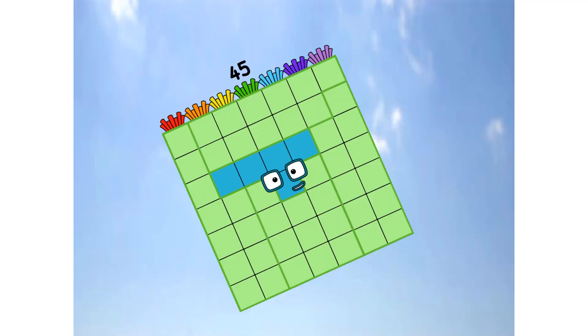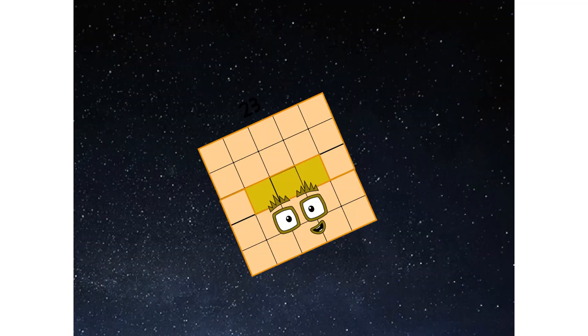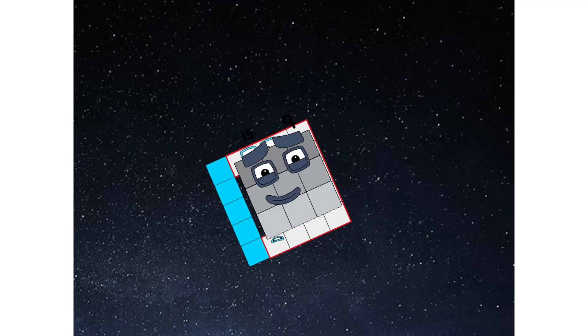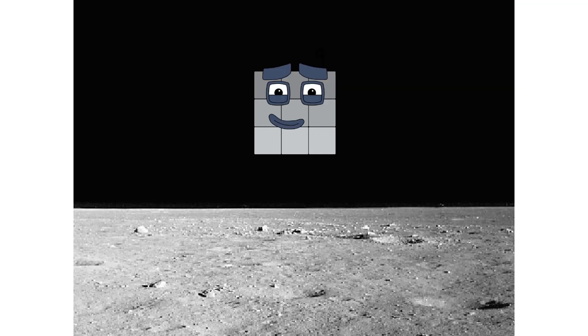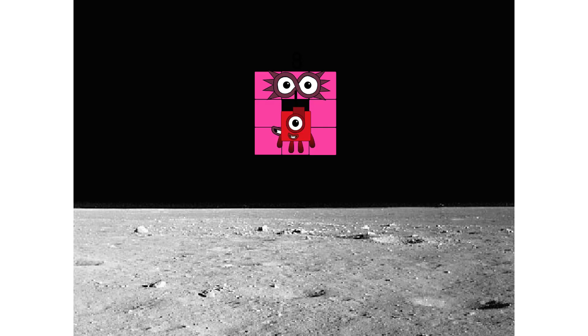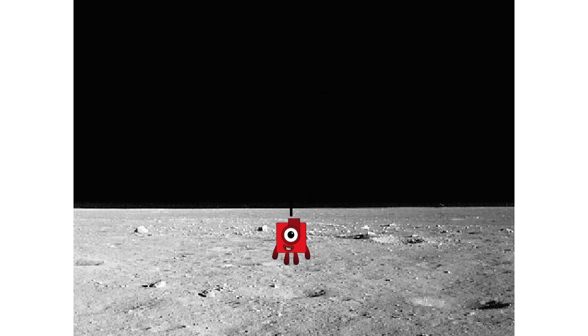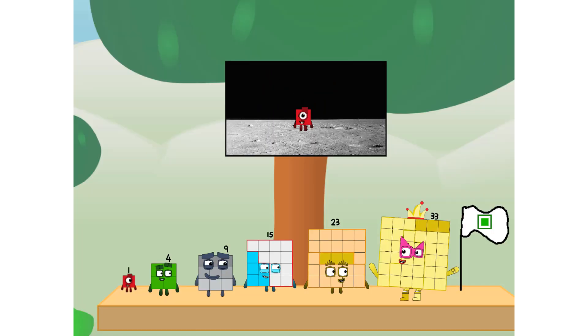Achoo! We have liftoff. Primary launch stage completed. Engaging secondary stage. Achoo! We've reached space. Second stage complete. Achoo! Entering lunar orbit. Launching lunar lander. Achoo! The square has landed. We did it. The only thing left now is to plant the square club flag.